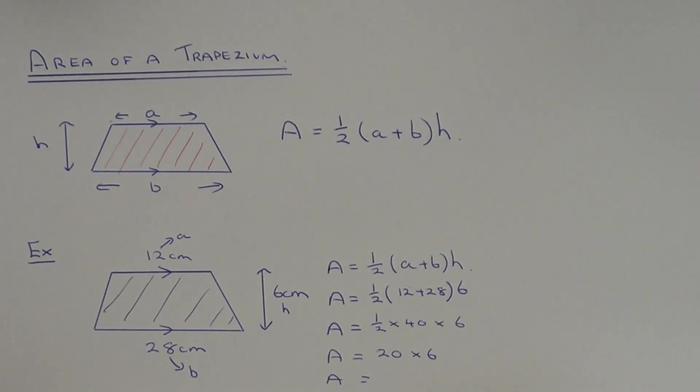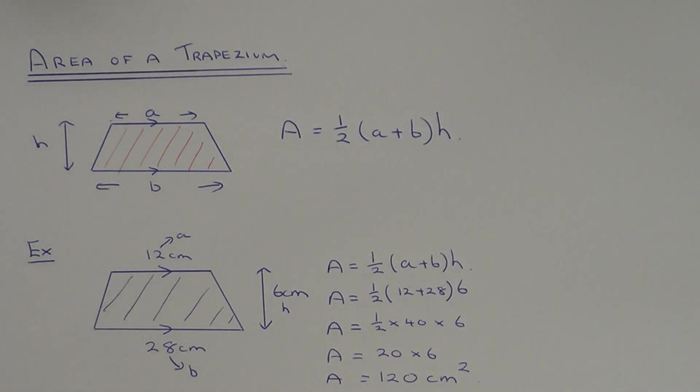So our area, twenty times six, is a hundred and twenty. And don't forget units which are centimetres squared. So that's your final answer.